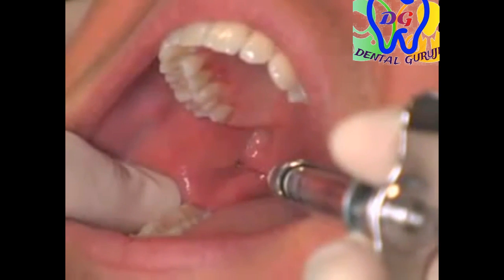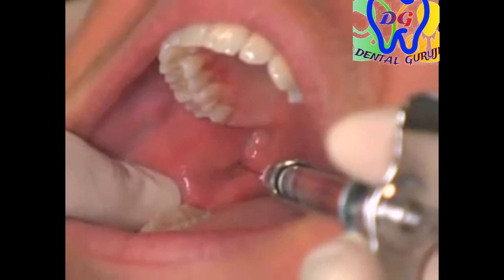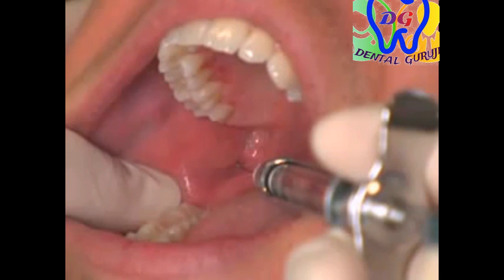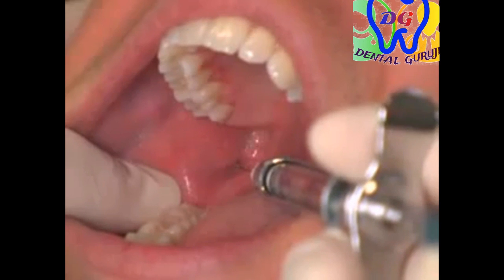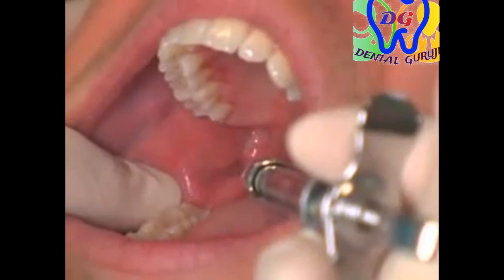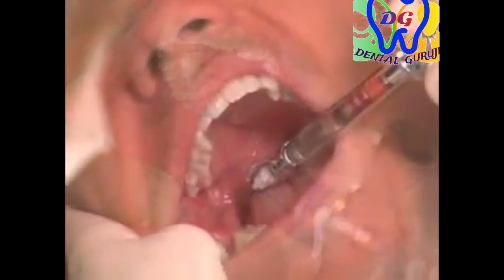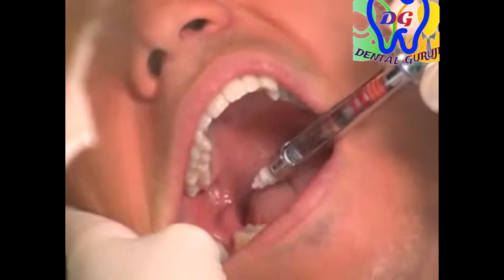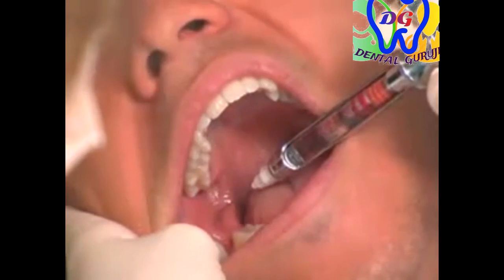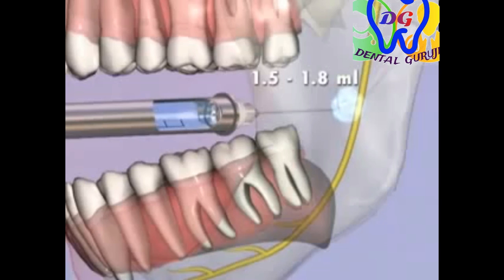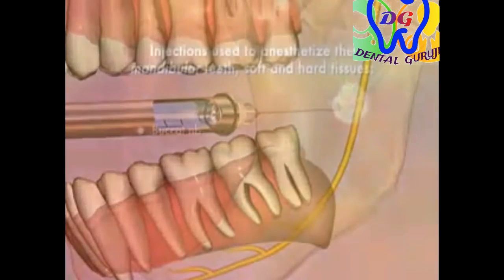The needle is then inserted and advanced slowly until bone is contacted. The average depth of penetration is between 20 and 25 millimeters, which is two-thirds to three-quarters the length of a long dental needle. Once bone is contacted, aspiration is performed twice, and if negative, 1.5 to 1.8 mLs of local anesthetic is administered slowly.